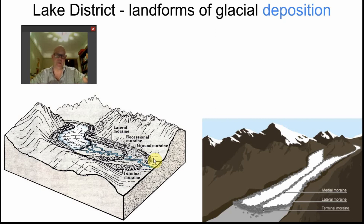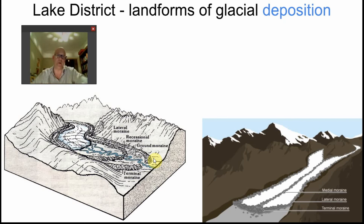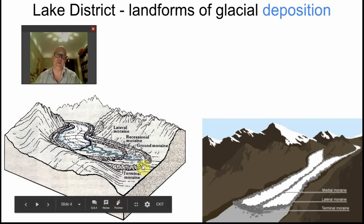The thing is, after the terminal moraine forms, as the glacier retreated, all that meltwater would have actually broken through it. So typically you don't see terminal moraines in landscapes because they've been reworked by the river — you might just see a little bit here and a little bit there. Very difficult to spot.